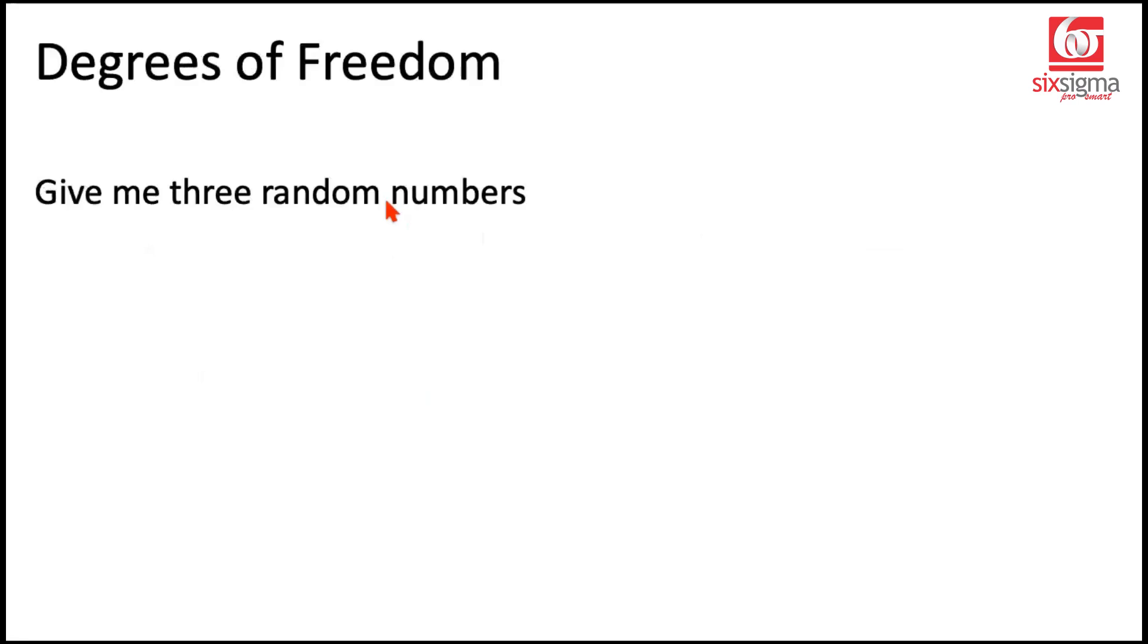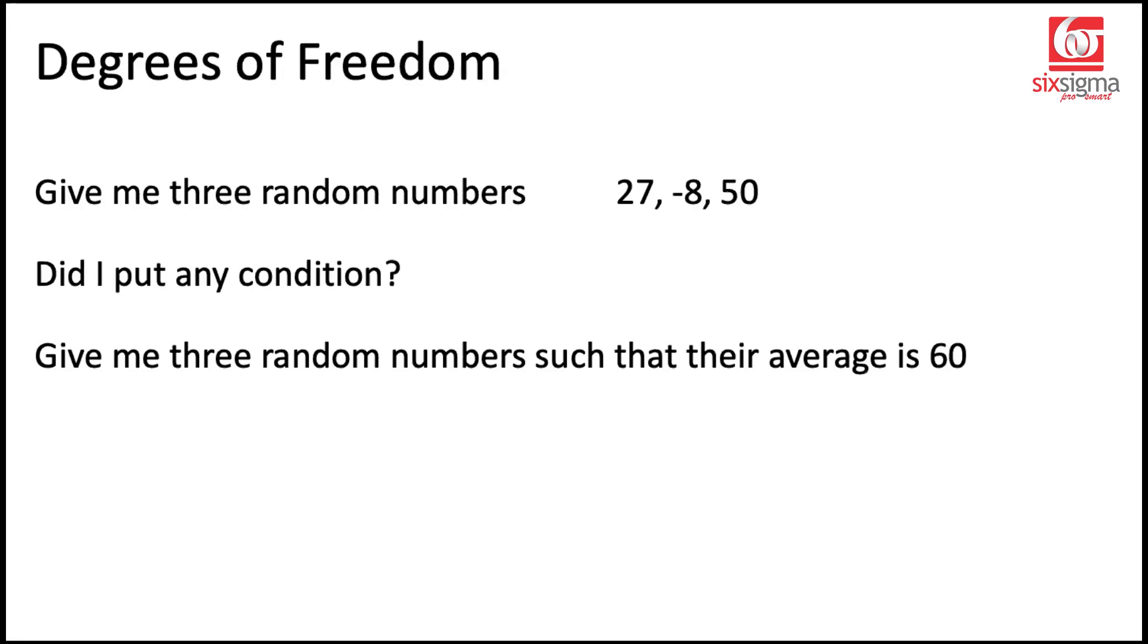Let's say I ask you to give me three random numbers and you come up with any random choices. You say the first number is 27. The second number is negative 8. And the third number is 50. I asked for three random numbers. You gave me three random numbers. Did I put a condition? Not really.